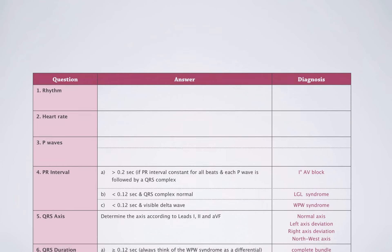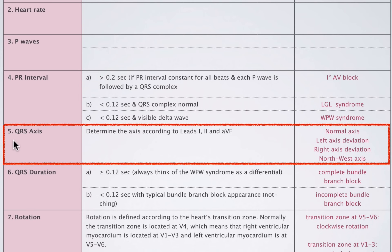We can now add item number five to our ECG cookbook: the assessment of cardiac axes. Use lead one, two, and AVF to assess the cardiac axis, and look specifically for left axis deviation or right axis deviation. A normal axis and a northwest axis won't add much to your clinical judgment. Next, watch the second video in this chapter on atrial enlargement and low voltage, followed by some cases and exercises. Take care and see you later.